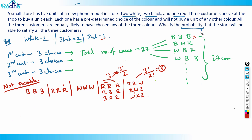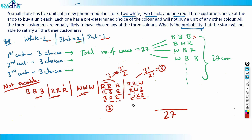So in total, we have removed 3 (same-color cases) + 3 (two-red-one-black) + 3 (two-red-one-white) = 9 impossible cases. That means 27 − 9 = 18 cases are possible. The probability that the store satisfies all three customers is 18/27 = 2/3.